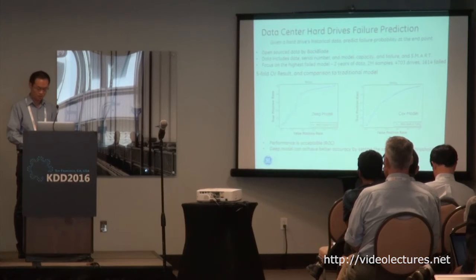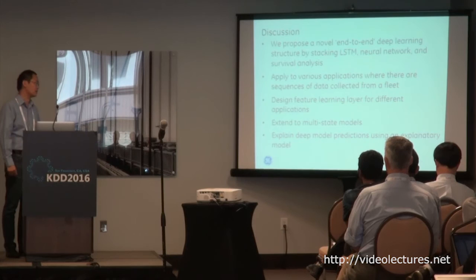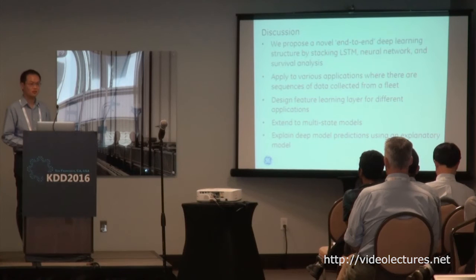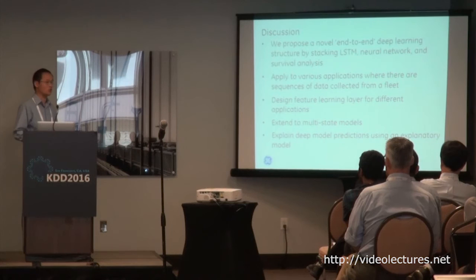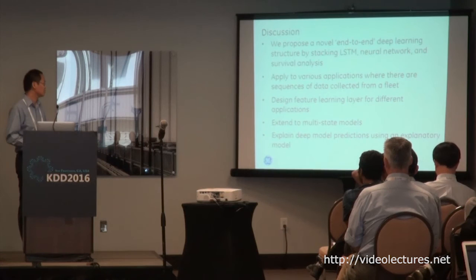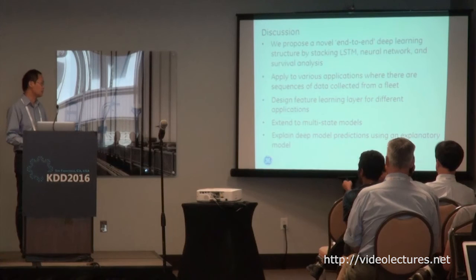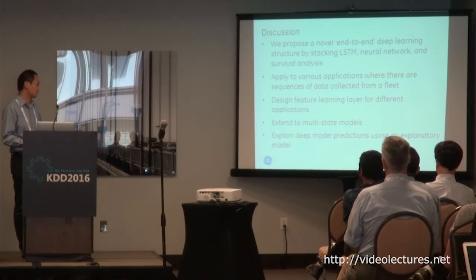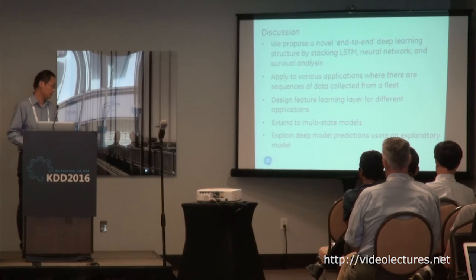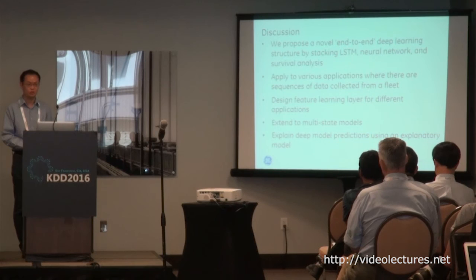That's basically what I have. For future work, as mentioned, this can potentially be applied to many cases you may be interested in. We can design more PHM-specific feature learning methodology for that middle layer. Also, this is a two-state model, but it could be extended to a semi-Markov model. Finally, I'm working on thinking hard about how to explain predictions made by deep models using simple linear explanatory models for customers and people who don't know much about deep learning. That's all.